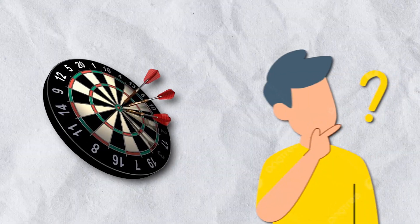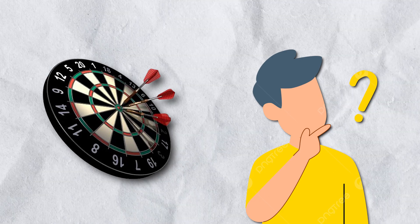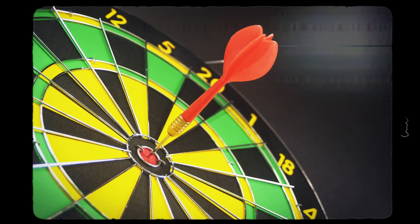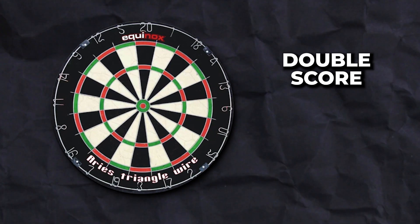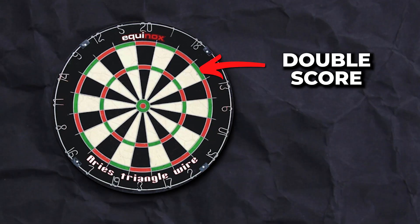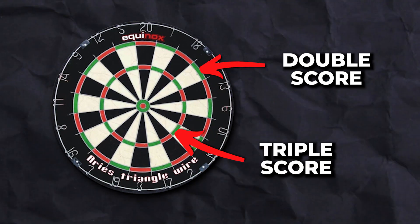Now let's go back to the dartboard. On a dartboard, where is the highest scoring position? A lot of people think it's the bullseye. Well, the bullseye is only worth 50 points. The truth is, if you actually look at a dartboard, there are rings around the dartboard that are double scores and triple scores. The double score is on the outside ring, and the triple score is on the inside ring.